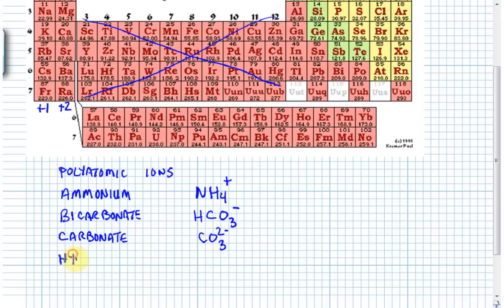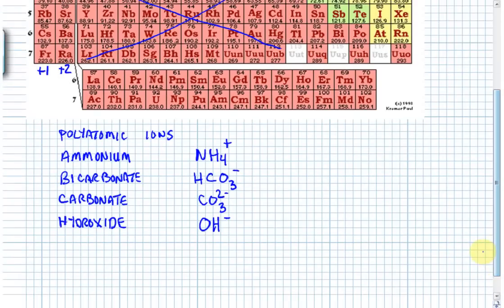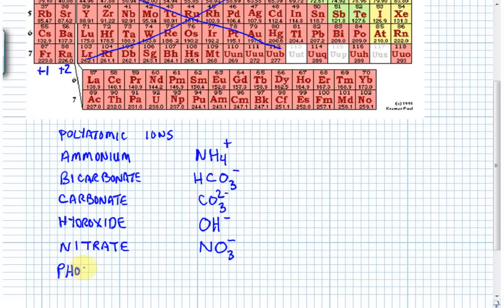Working in alphabetical order, next is hydroxide — a very important polyatomic ion, particularly in acids and bases. Hydroxide has the formula OH⁻ with a minus 1 charge. Next is nitrate: nitrate surprisingly contains nitrogen. Its formula is NO₃⁻ with a minus 1 charge. Up next is phosphate — not surprisingly, phosphate contains phosphorus and oxygen. Its formula is PO₄³⁻ with a minus 3 charge.